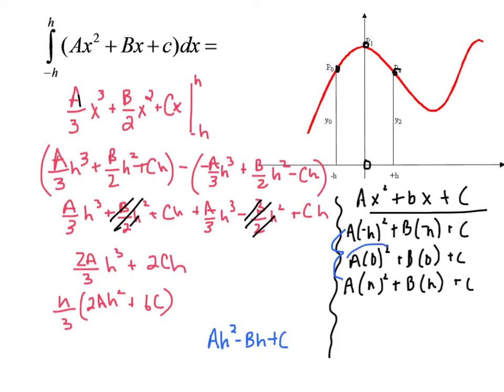Now of course you notice that this is just c, plus ah squared plus bh plus c. Well, take a look at this. These are gone. 2ah squared plus 3c.